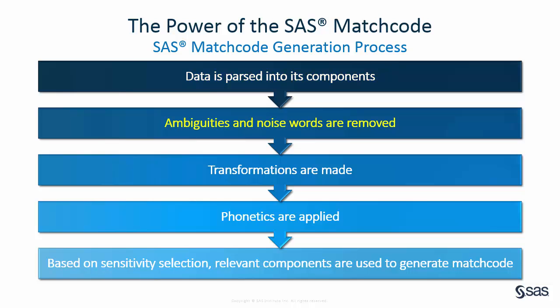Next, the data is uppercased so all information will be in the same format. Also, items like extra spaces, punctuation, special characters, and noise words such as 'the' and 'of' are removed. Next, transformations are made using industry-leading data quality algorithms. For example, when using the name match definition at the English language locale level, Elizabeth and Liz are transformed to Beth behind the scenes to allow nicknames to generate the same match code.